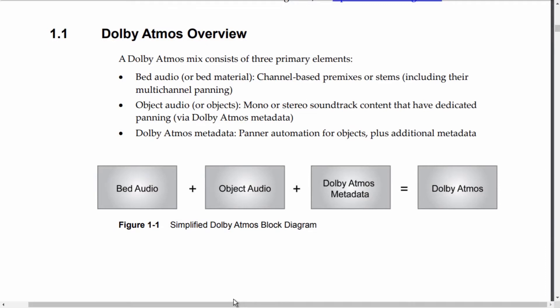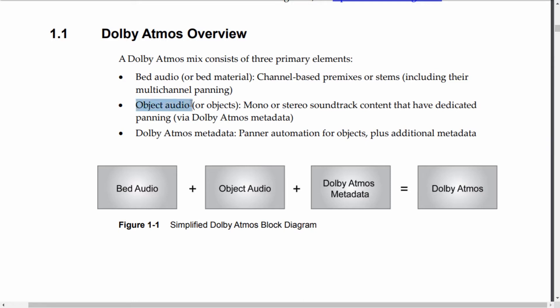First of all, what is Dolby Atmos? A Dolby Atmos mix consists of three primary elements: bed audio, which is channel-based premixes or stems including their multi-channel panning; object audio, which is in the form of mono or stereo soundtrack content that have dedicated panning; and Dolby Atmos metadata, which includes panel automation for objects plus additional metadata.